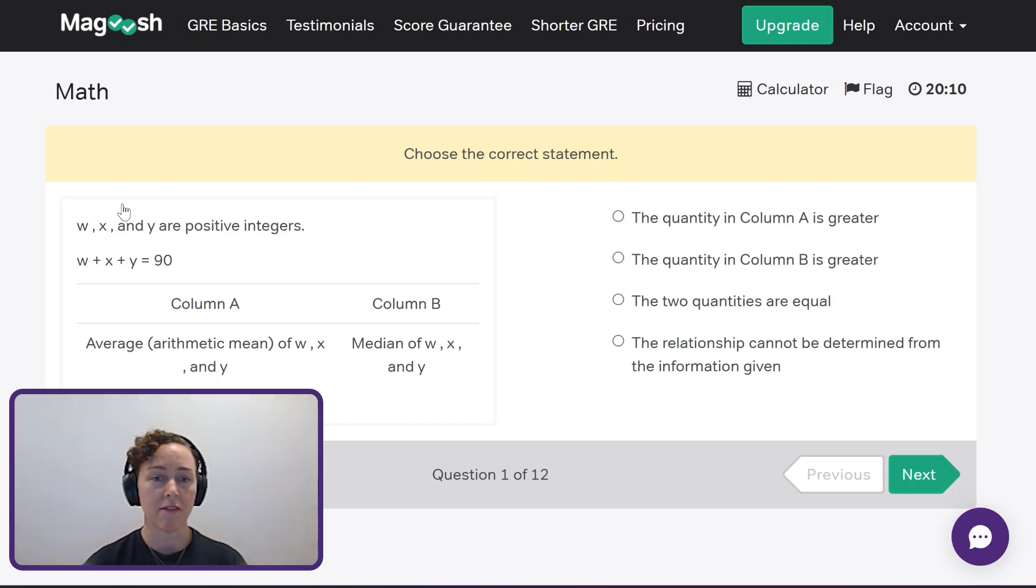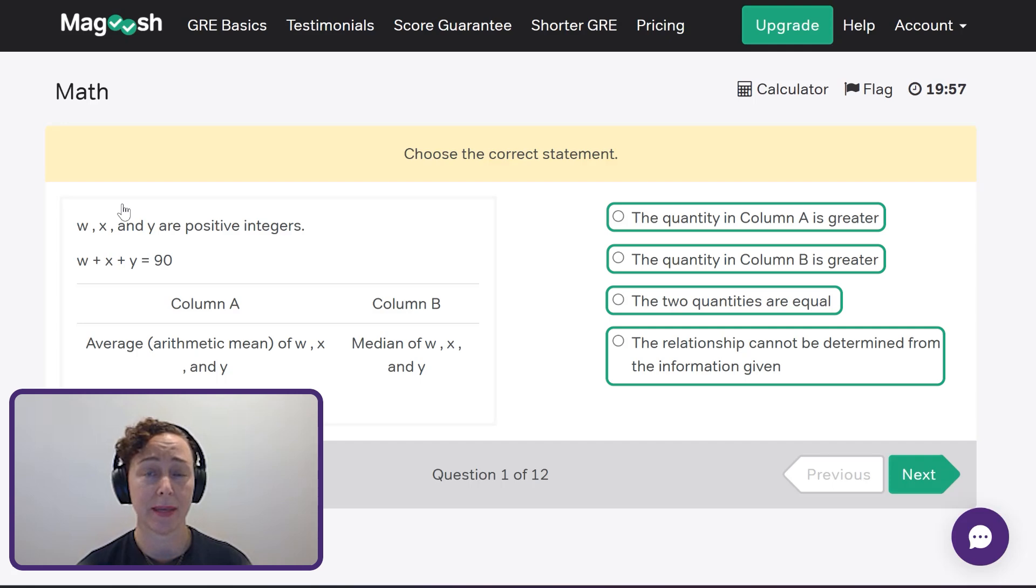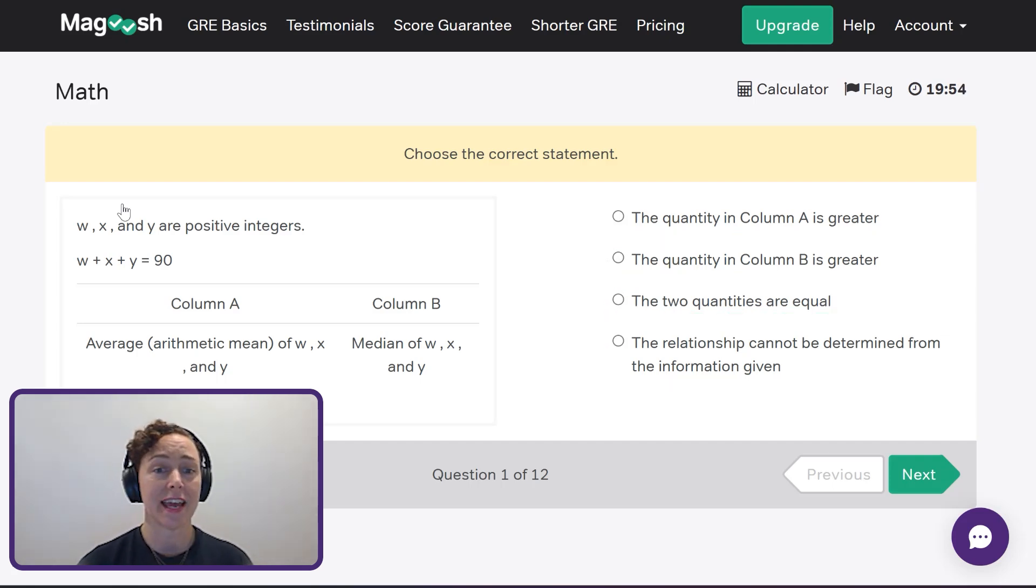Now column B is the median of w, x, and y, and I can assign whatever values I want. So really, I'm just trying to prove that column A is greater or column B is greater or they're equal or an answer can't be determined because I get different answers. So if I say that w, x, and y, they're all 30, 30, 30, and 30, then I've proven that they are equal. But I can easily say, well, how about another case in which I've got w is 1, x is 1, and y is 88? Well, now I've shown that column A, which is 30, is greater than column B. And I've done enough work to know that the relationship cannot be determined from the information given because I get different answers. Sometimes they're equal. Sometimes A is greater. I could even make B greater. Don't need to.